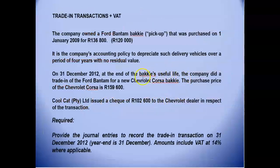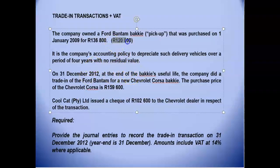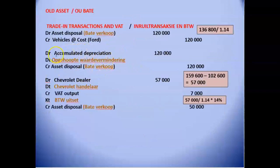The asset was fully depreciated at the end of its useful life with no residual value, so the accumulated depreciation equals the cost price of the asset. Therefore, we debit accumulated depreciation of $120,000 and credit the asset disposal account with $120,000.